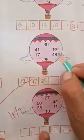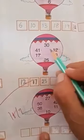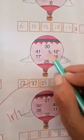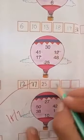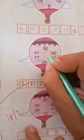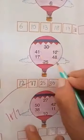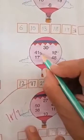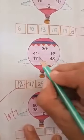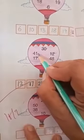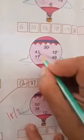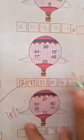And now 3 numbers are left: 30, 41, 48. And 30 is the smallest. Now 41 and 48 — 41 comes before 48 in counting, so 41 is the smallest. And last is 48.